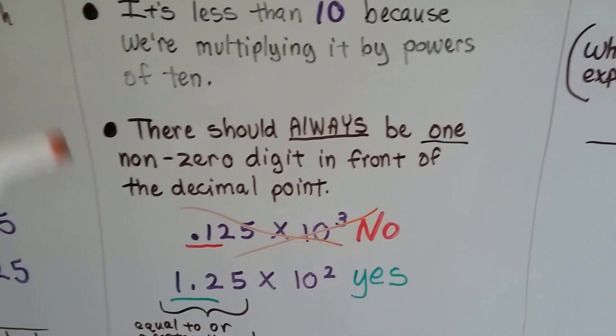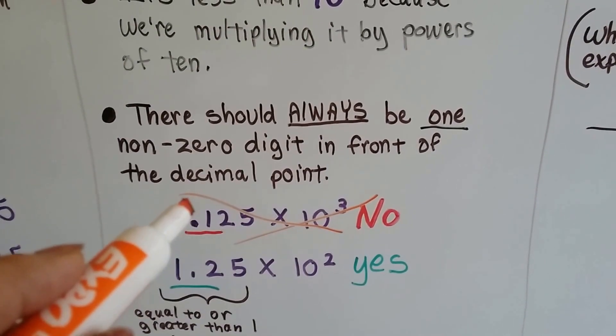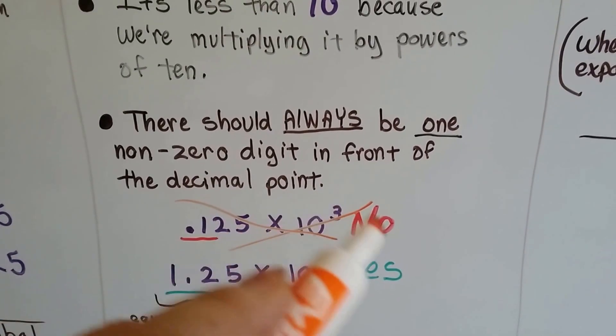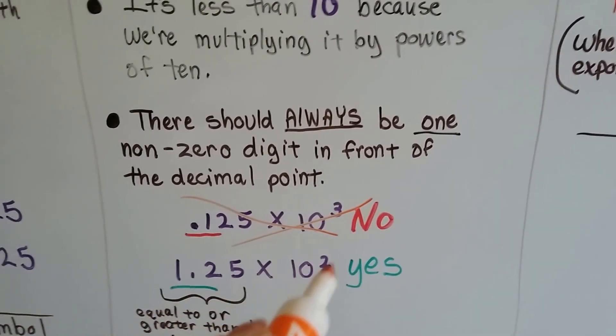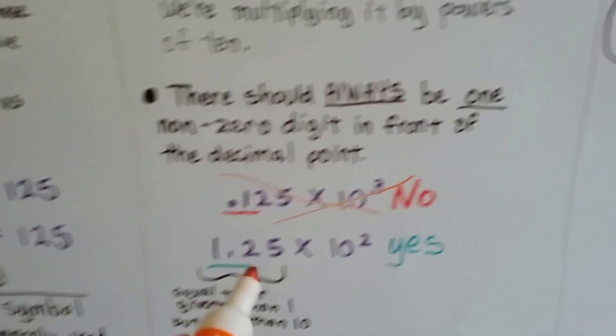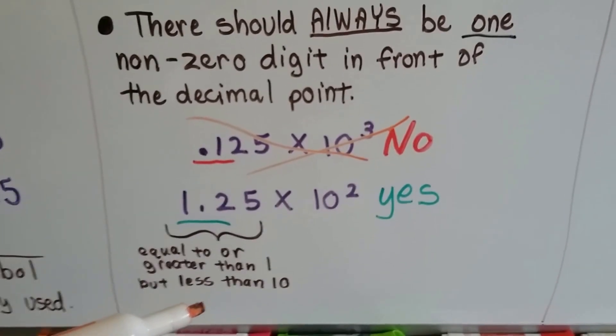There should always be one non-zero digit in front of the decimal point. So writing it like this would be wrong. It wouldn't be .125 times 10 to the third. That's wrong. It would be 1.25 times 10 to the second for 125.